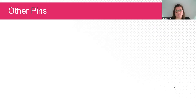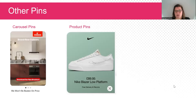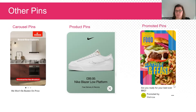Other pins available within Pinterest include carousel pins — so multiple images. You'll know they're carousel pins because you'll see those three gray dots underneath, which indicates you can swipe across to see other images. We also have product pins — if you are a retailer, you want to be uploading your product pin, which will come from essentially your catalog, including information about the product. And we also have promoted pins. This pin just here, you can see, has been promoted by Waitrose. Like most social media platforms, it's obvious when there's a promoted pin because it has to be labeled.